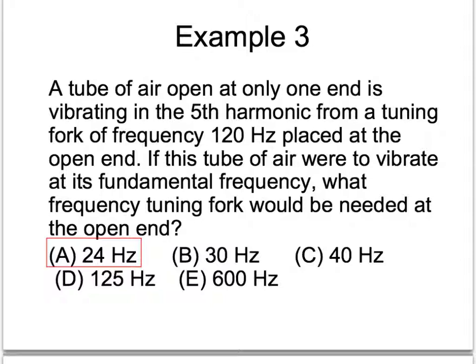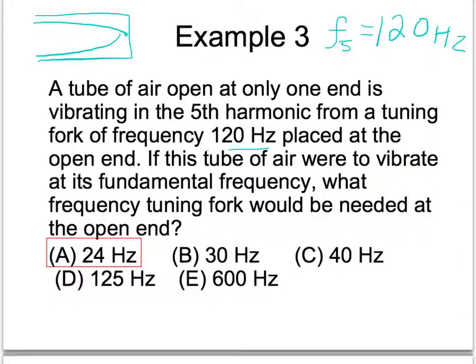Final example: a tube of air open at only one end is vibrating at the fifth harmonic. We know we'll have a node at one side and an anti-node at the other. If it's operating at the fifth harmonic, we have several half-wavelengths inserted inside between the node and the anti-node. This is vibrating from a tuning fork of frequency 120 hertz, so the fifth harmonic is 120 hertz. You couldn't have a fourth or second harmonic — a tube open only at one end only allows odd harmonics, because you end up with a quarter wavelength.